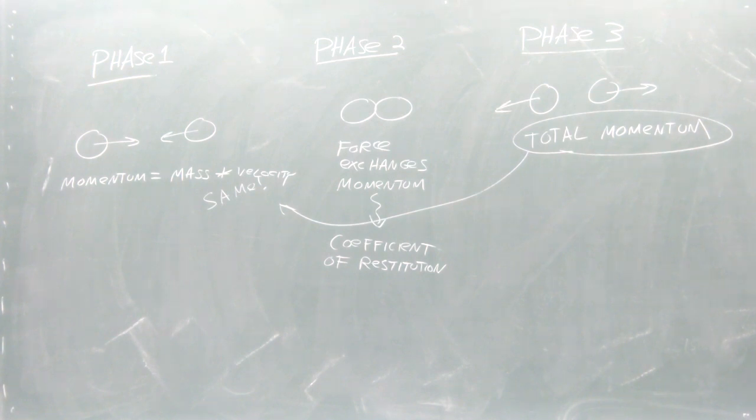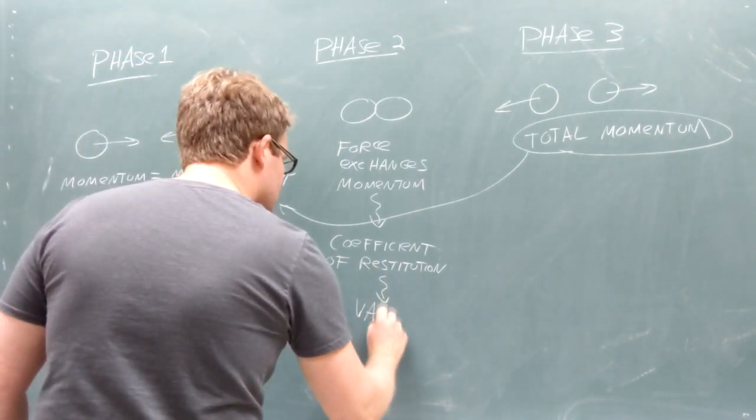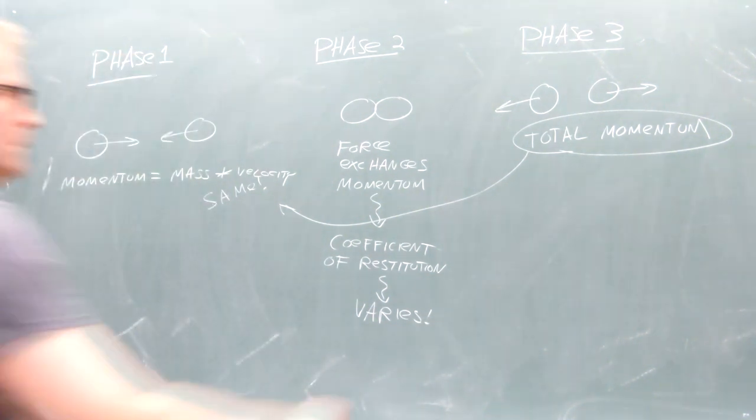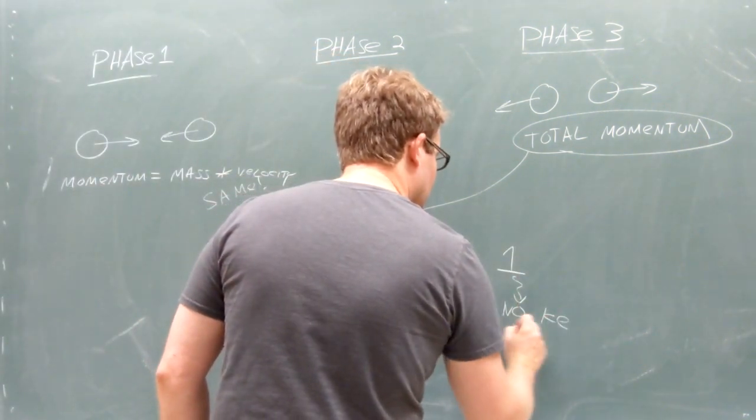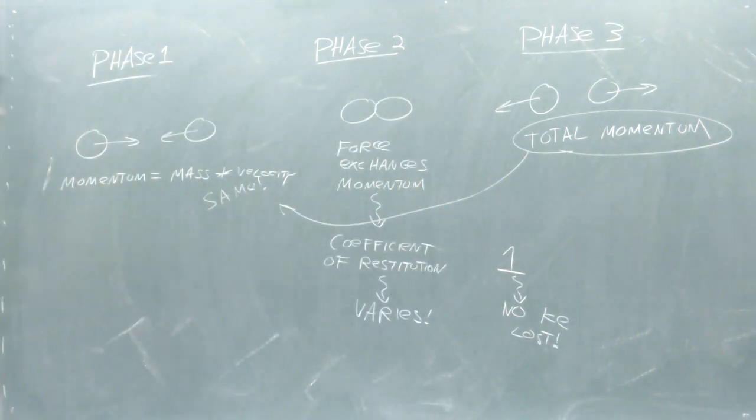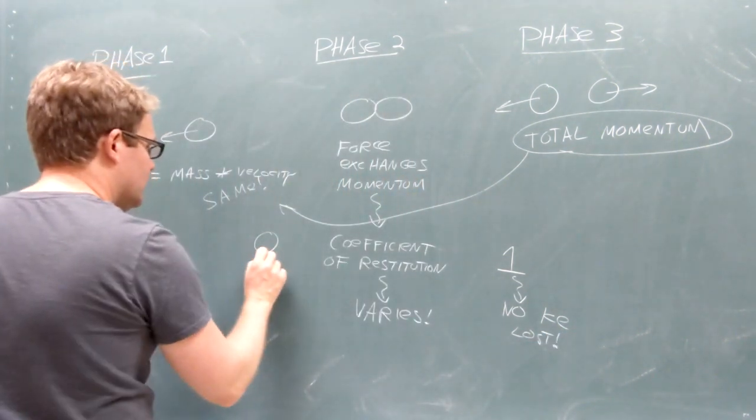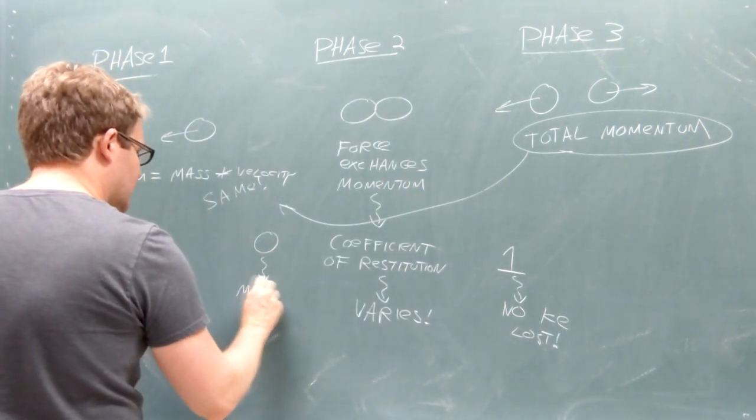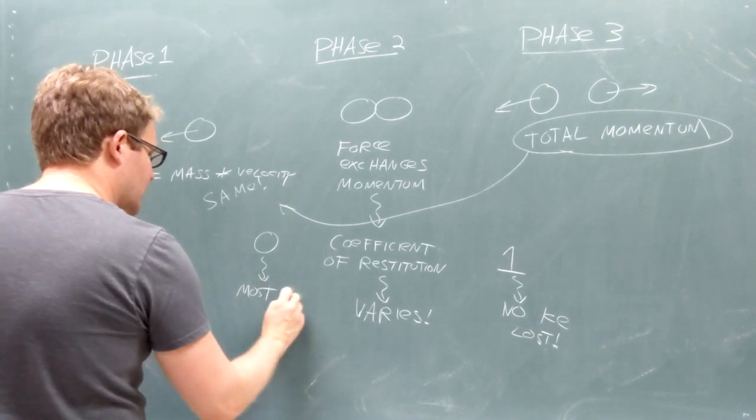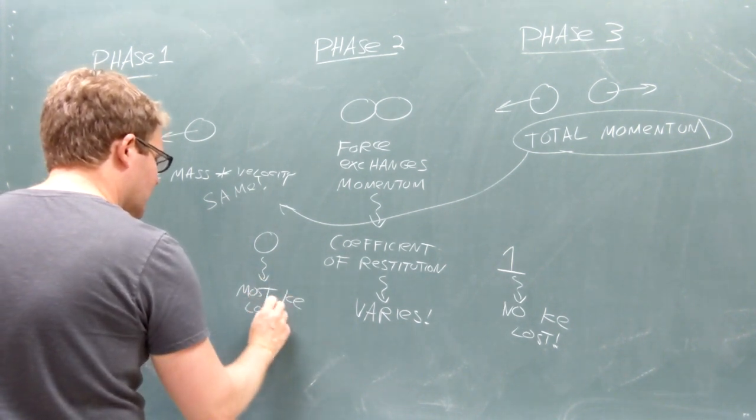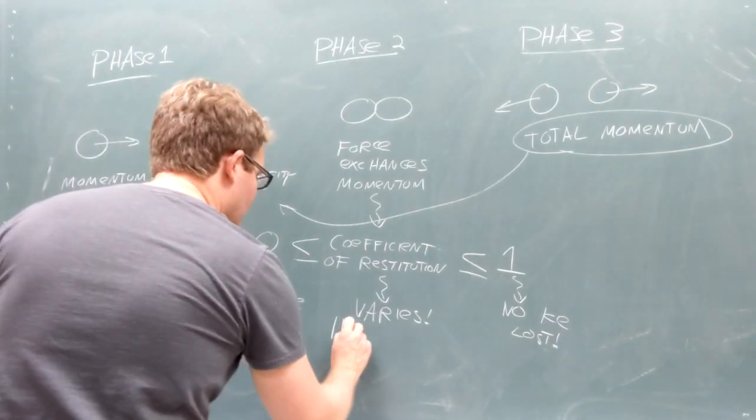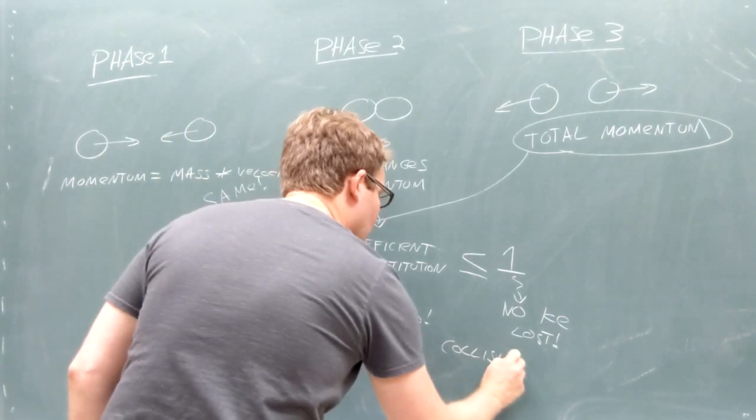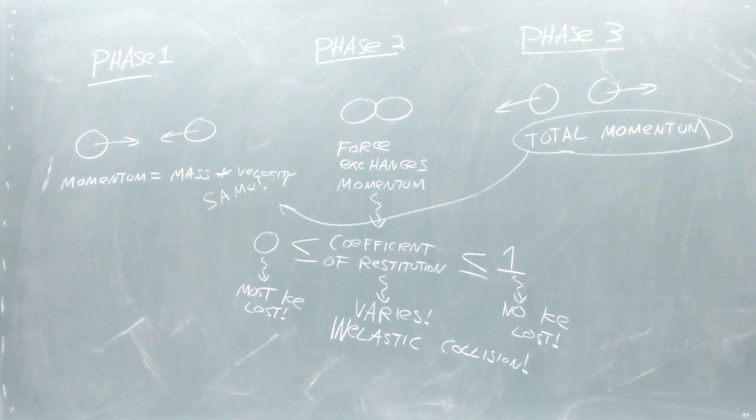The part of this process that makes collisions behave differently is the coefficient of restitution. You can think of the coefficient of restitution as a measure of how much kinetic energy was lost during the interaction. A coefficient of 1 means that no kinetic energy was lost during the interaction. And a coefficient of 0 means that the most kinetic energy possible was lost during the interaction. When the coefficient of restitution falls between 0 and 1, we have an inelastic collision.